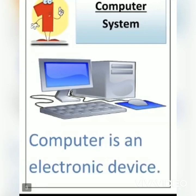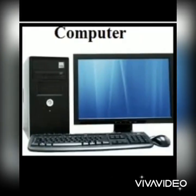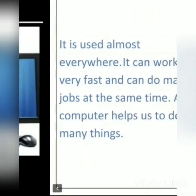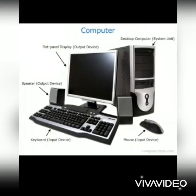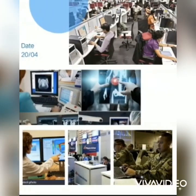Now, what is a computer? A computer is an electronic device that makes and stores quick calculations or processes information. It can work very fast and can do many jobs at the same time. It is playing a great role in our life — it makes our life very easy and fast with accuracy. With the help of a computer, we can do work in hours that was done before in days or months.